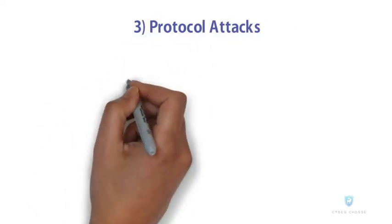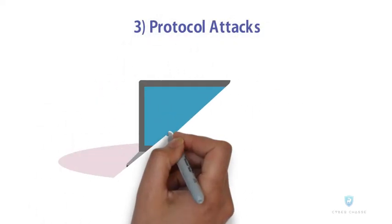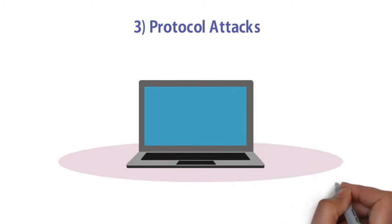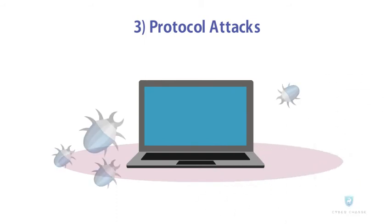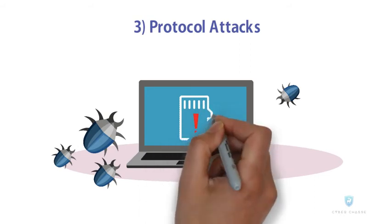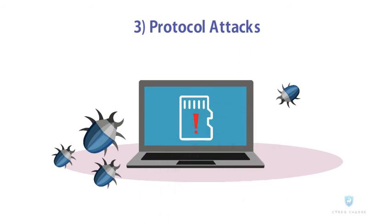Third, Protocol Attacks: the network parts used for connection verification are targeted by sending malformed and slow pings intentionally, making the network consume a lot of memory to verify such pings. In certain scenarios, hackers may employ all three types at once to crash a network completely.